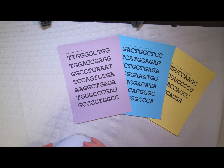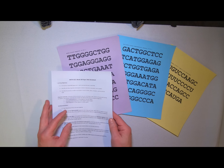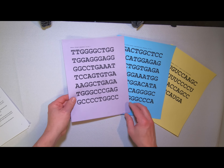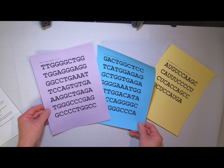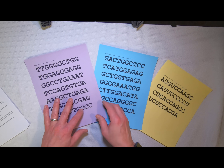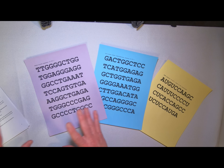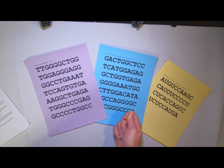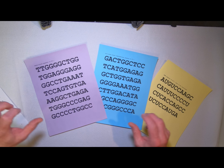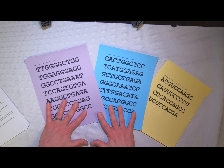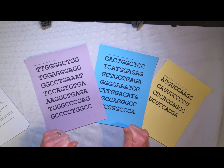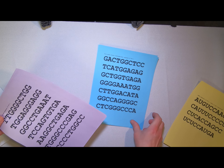Today we're going to do the paper DNA worksheet activity. You want to get your activity page, your printed pages of the sense strand, the antisense strand, and the mRNA sequence. Here I have them printed on colored papers, which is described in the worksheet, but we also have versions printed with different fonts, so you can print them on white paper and still get the same effect because these strands are different from each other. The sequences are complementary, as you'll see, but they're not the same sequences — you need to be able to differentiate them.